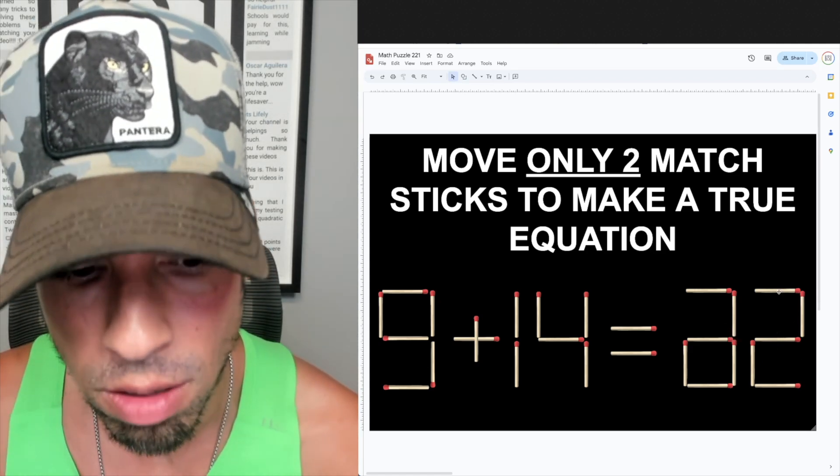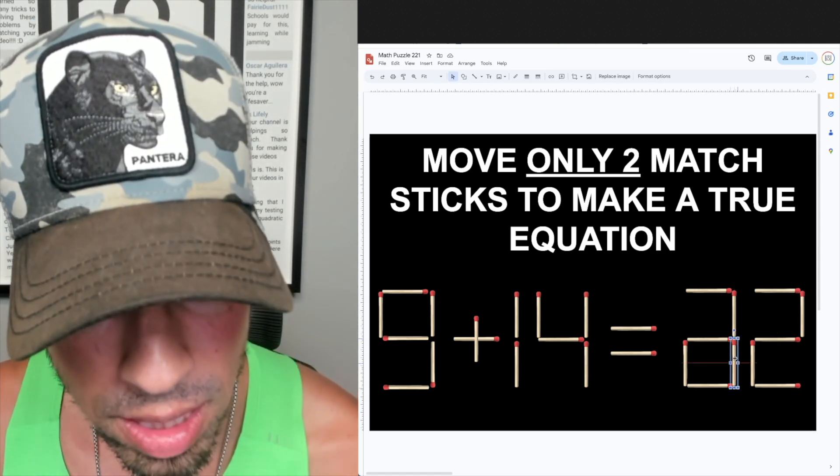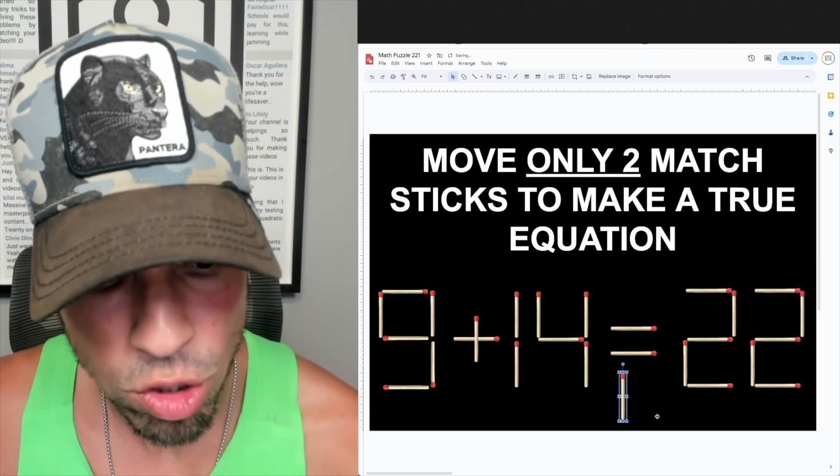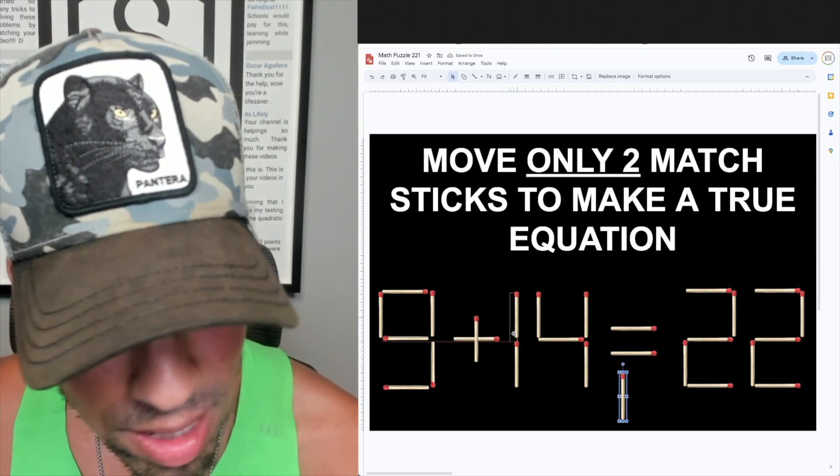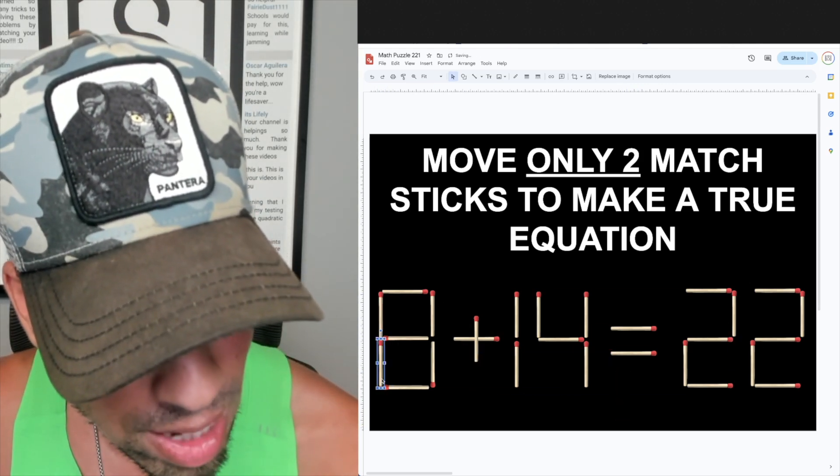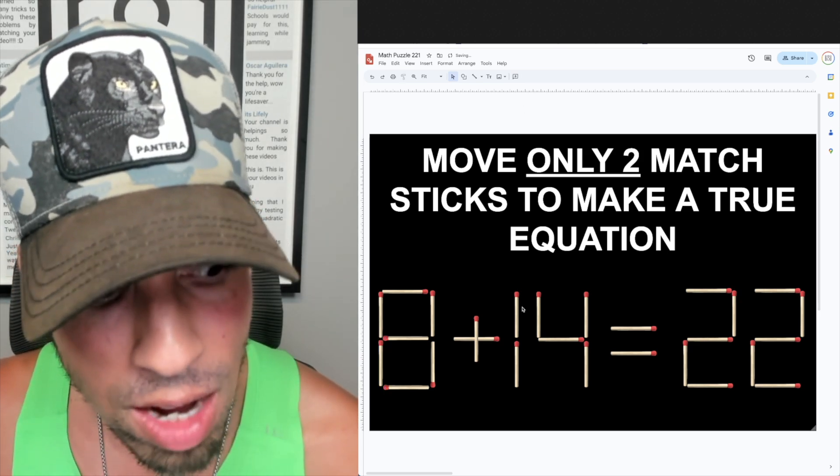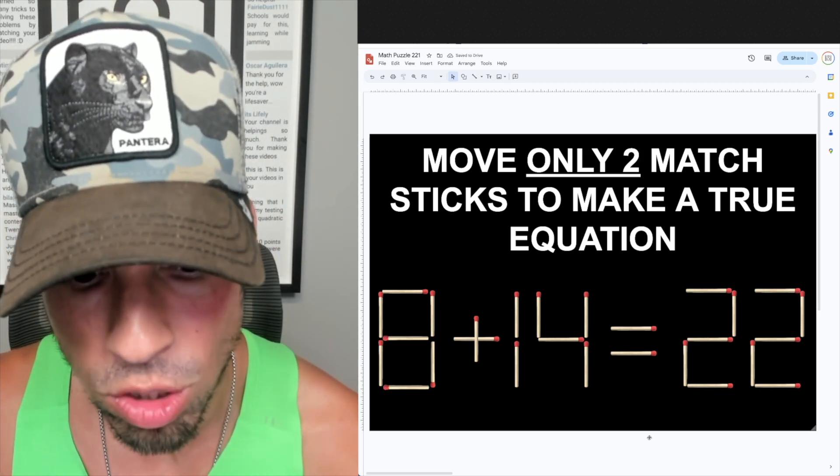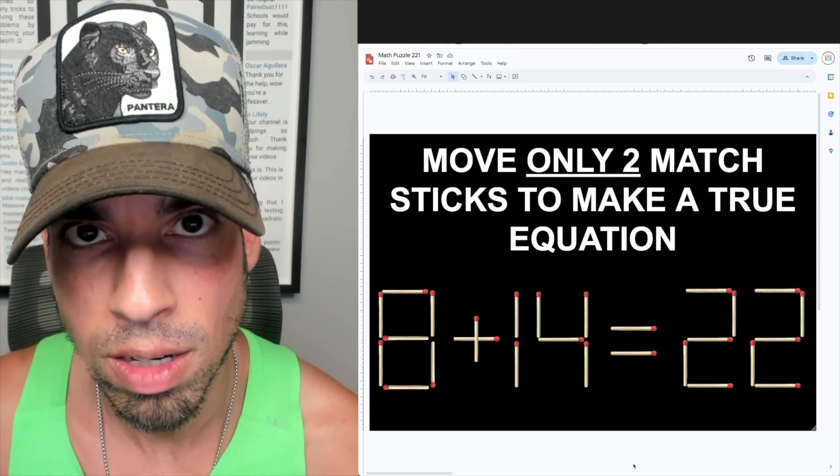We have a second digit of a 2 here. But if we take this piece and move it, this is now 22, which is a legit number. And then if we place this here, we turn that 9 into an 8. And now we have a true equation: 8 plus 14 equals 22. That's how you do it, done!